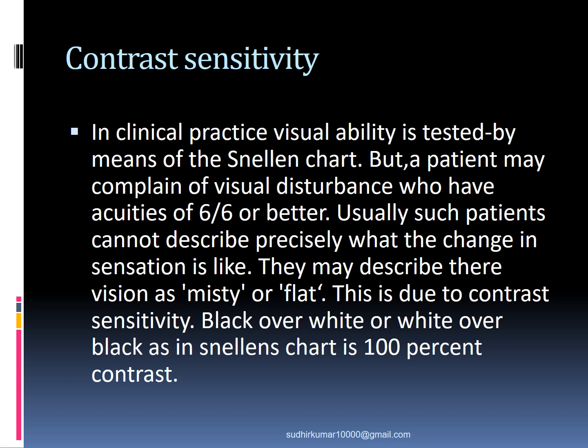Contrast sensitivity: in clinical practice, visual ability is tested by means of Snellen's chart. However, a patient may complain of visual disturbance while having acuity of 6/6 or better, and you may think the patient is normal, but he still complains that his vision is not normal. The patient cannot describe precisely what the change in sensation is like and may simply say their vision is not as good as the other eye, describing it as misty or flat. This is due to reduced contrast sensitivity.